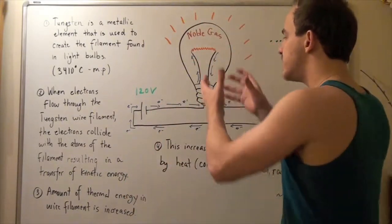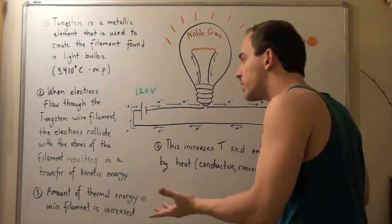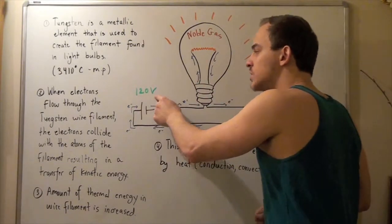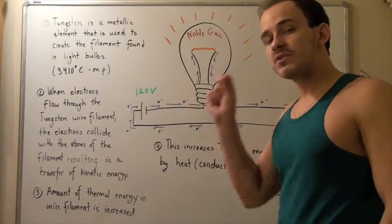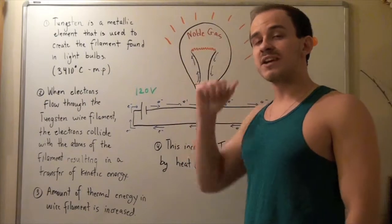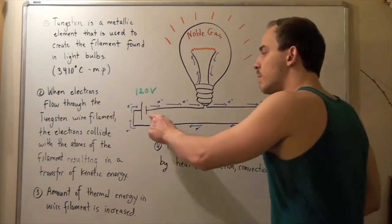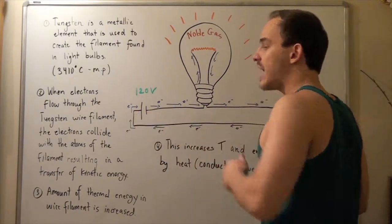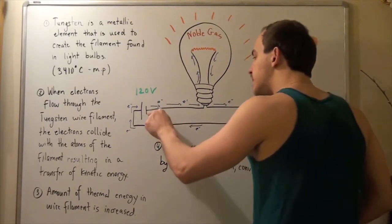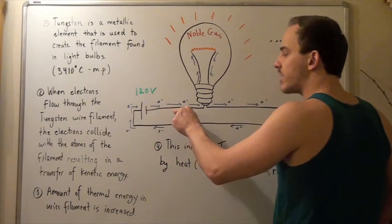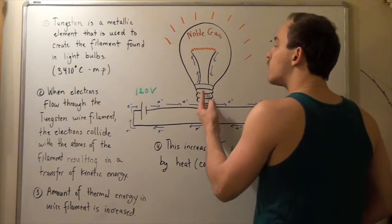Let's suppose we take our light bulb and plug it into our electric circuit, which has a battery of 120 volts. The battery has an electric potential difference of 120 volts. Electrons move from a higher electric potential to a lower electric potential, meaning electrons will move from our anode to our cathode. So electrons begin at the negative part of our battery and travel along our pathway, along our electric circuit, and then go into our light bulb.